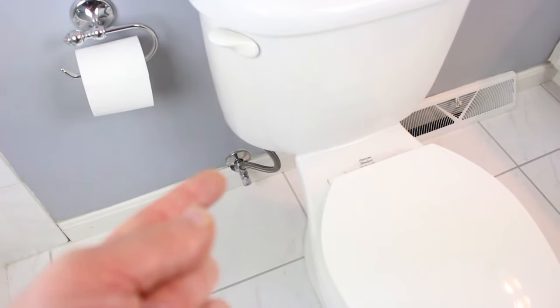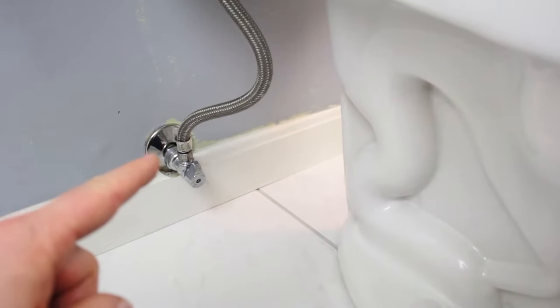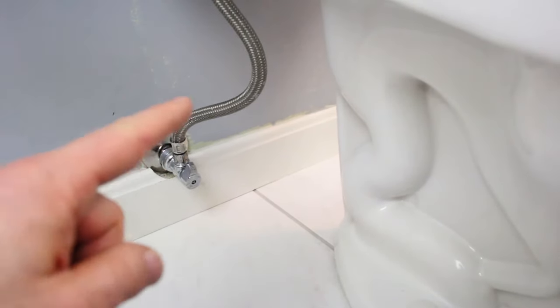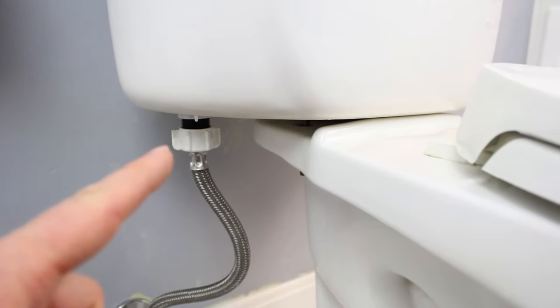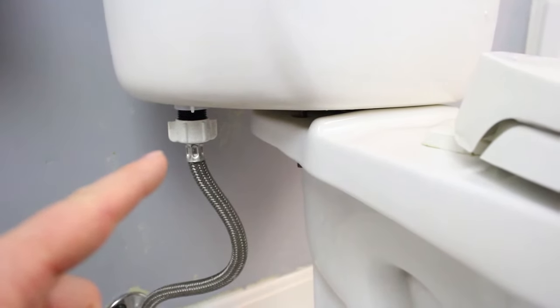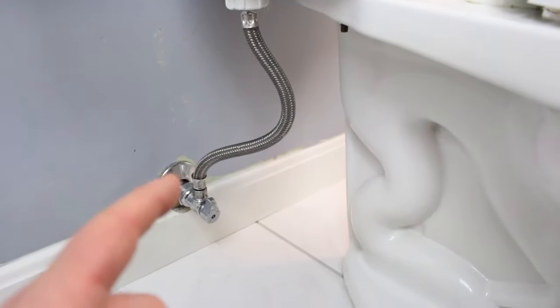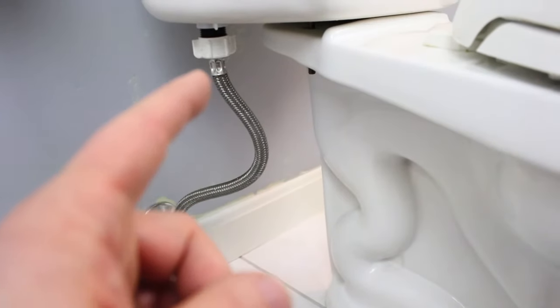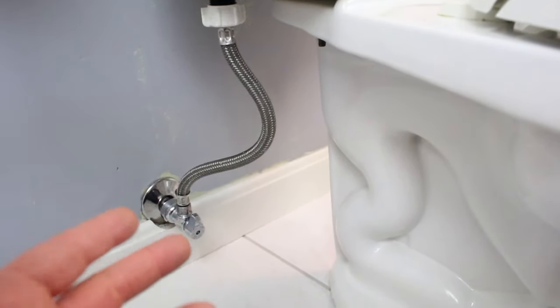So for toilets, obviously the water supply line is right here. And there are two points where they leak. Here's point number one: the connection between the water supply line and the shutoff valve. And here's the second place where it leaks, where it connects to the fill valve of the toilet. Now believe it or not, these water supply lines should be switched out every 10 years because they do go bad. And I highly recommend that you stick with steel braided water supply lines because of their strength and durability.